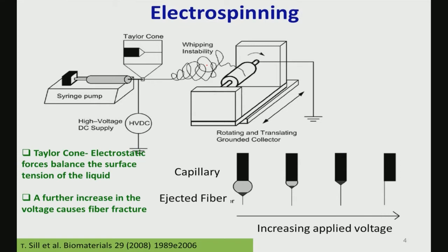The second technique is electrospinning. You take a polymeric precursor solution in a syringe pump, form a Taylor cone, make it unstable, and then deposit the material on either a rotating and translating collector or a flat receiver plate. Capillary forces are important, and voltage is applied between the syringe pump and the collector plate. Taylor cone formation is fundamental to electrospinning and originates from electrostatic force balance and surface tension of the liquid.